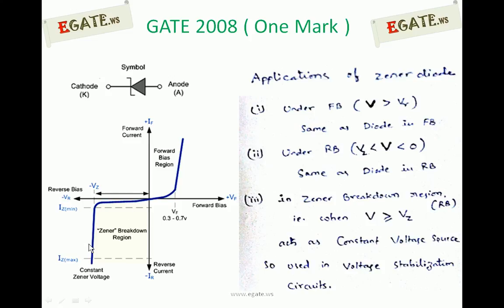The third region is whenever the voltage across the Zener diode exceeds the Zener breakdown voltage. As indicated in the diagram, if you apply more than this voltage, the diode enters the Zener breakdown region where it ideally maintains a constant voltage. Even if you apply more than Vz, it ideally maintains constant voltage — that's why it is used as a constant voltage source in applications such as voltage stabilization and voltage regulator circuits. This region spans from Iz minimum to Iz maximum, during which it maintains constant voltage.